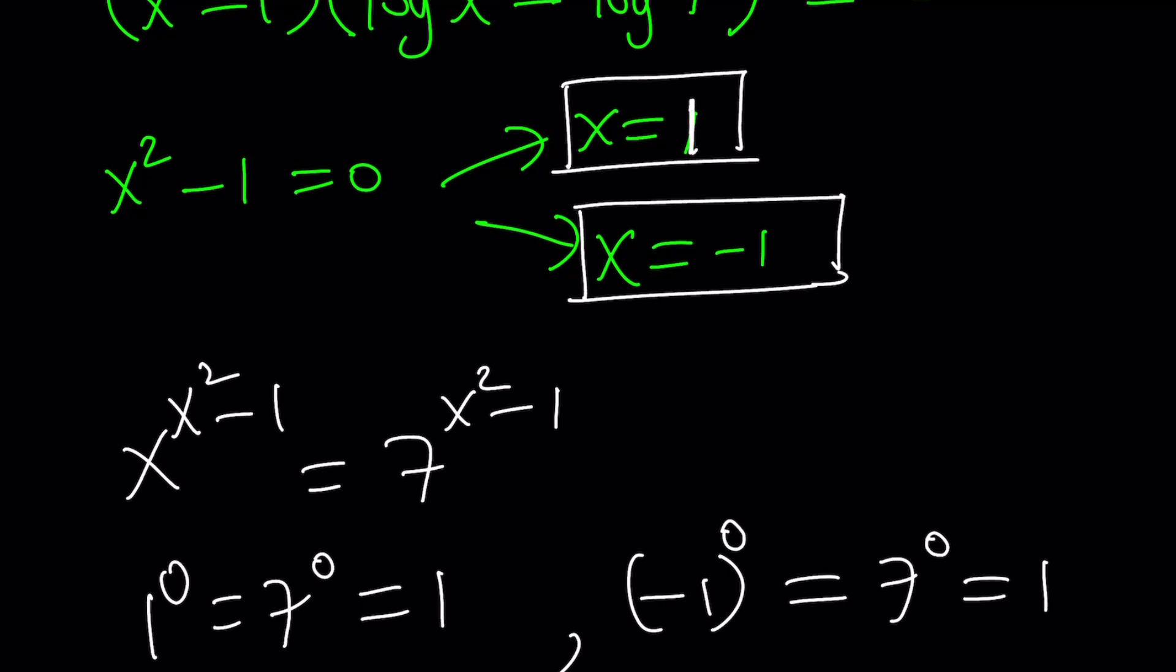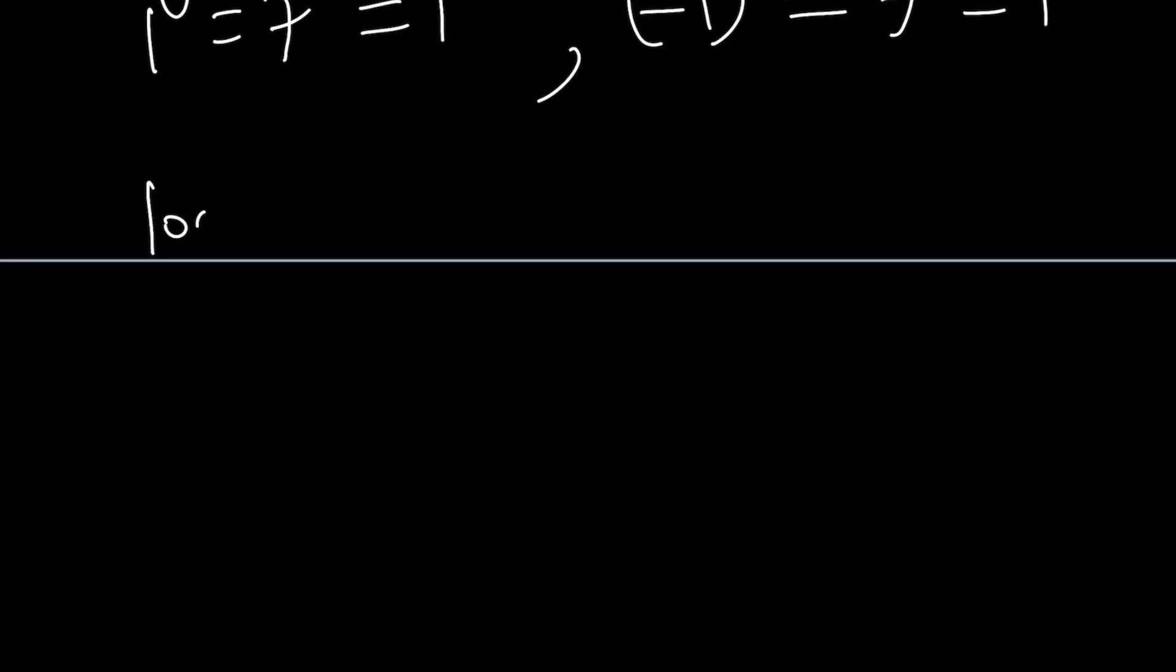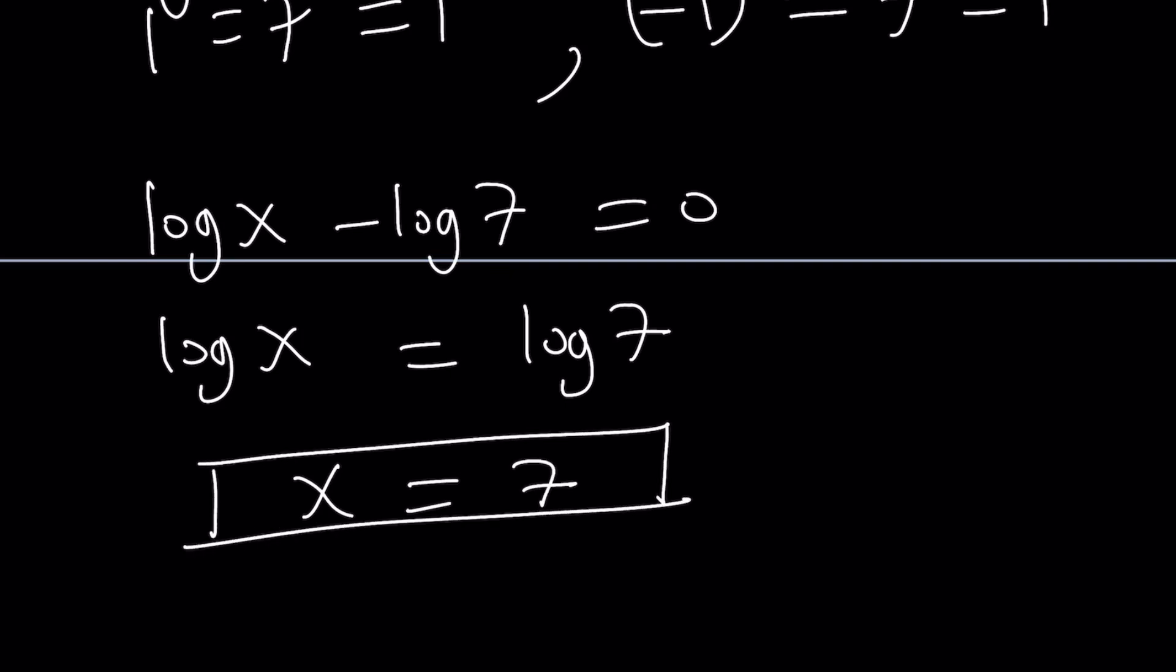Great. But are those the only solutions? The answer is no. What is another solution? Well, we didn't check the other factor, so we're not done yet. Let's go ahead and take a look at this. What does that tell us? Log x minus log 7 equals 0. Now, this means log x equals log 7. And this naturally implies x equals 7. Wow. We got ourselves another solution.